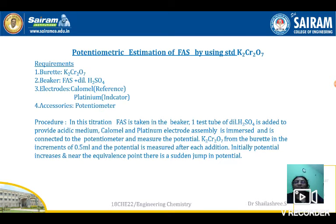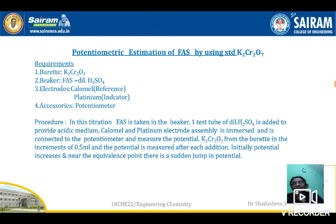For the potentiometric estimation of FAS using standard potassium dichromate: potassium dichromate is taken in the burette, FAS solution is taken in the beaker, and dilute H₂SO₄ is added to provide acidic medium and prevent air oxidation of FAS. The platinum and calomel electrode assembly is immersed in the solution and connected to the potentiometer. Potassium dichromate is added in increments of 0.5 ml; after each addition the solution is bubbled well and the potential is noted.